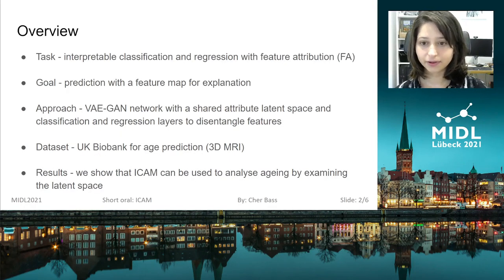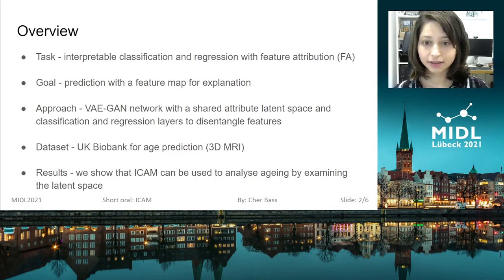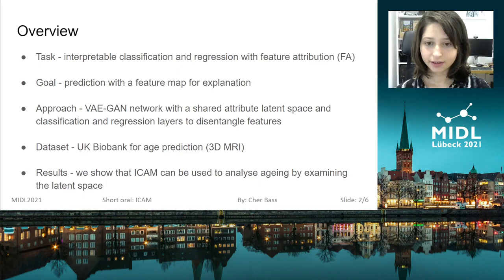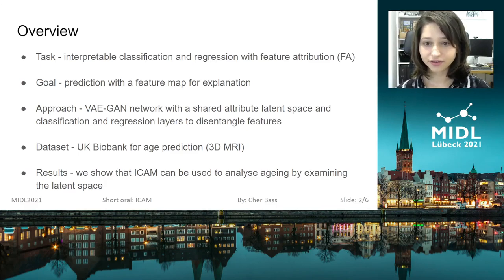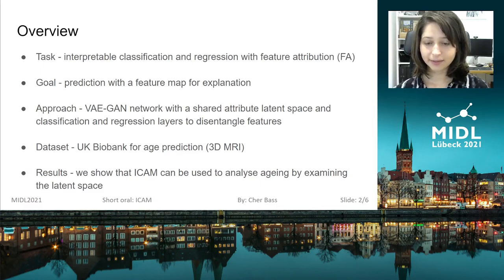We developed an interpretable deep learning method for visualization of class relevant features of an image. In this paper, our goal was to explain a prediction using feature maps generated by our method. To achieve this, we use a VGAN network with a shared latent space and an additional regression layer to disentangle class relevant features and encode phenotypic variability that occurs in brain imaging data. We showed that ICANN can be used to analyze aging by examining the latent space and generating feature maps directly from the latent space for explanation.